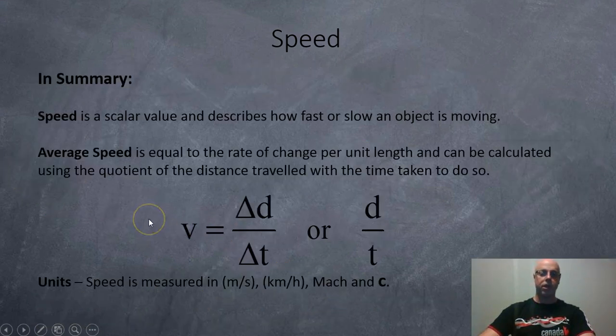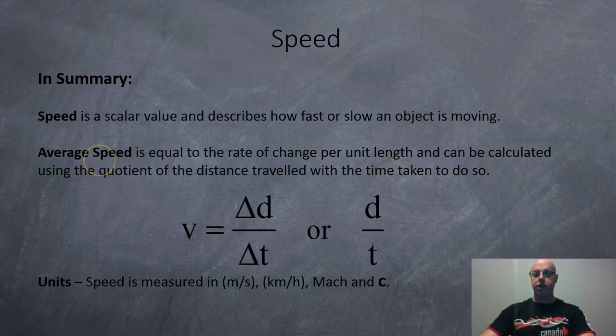Okay. So, in summary, speed is a scalar value. There's no direction involved. And it describes how fast or slow an object is moving. Average speed is calculated by just taking the distance and divide it by the time. And the units for speed are scientifically meters per second. Common units kilometers per hour. And you may also use Mach or C. And that's it. Hopefully, this was informative.